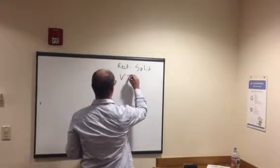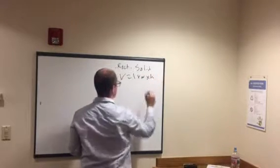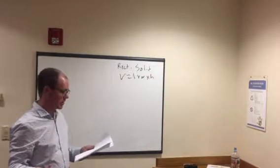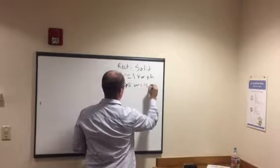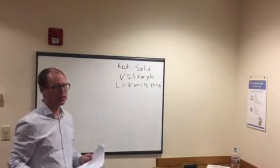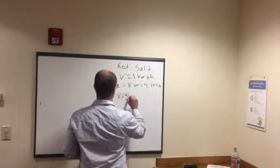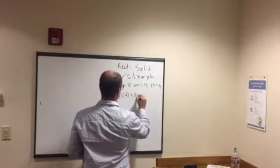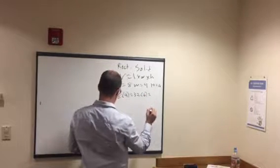So rectangular solid, volume equals length times width times height. As a quick example, say they say length 8, width 4, height 6. Then we just have to go multiply them together. Pretty simple. 8 times 4 is 32 times 6, 192.